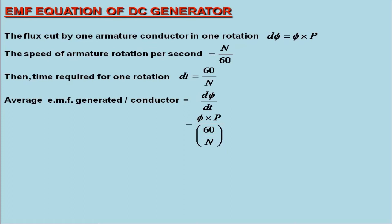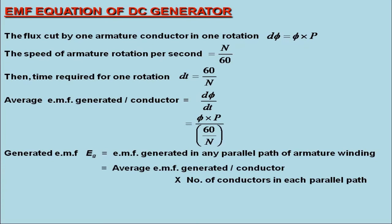We know that the generated EMF in a DC machine is nothing but the EMF generated in any parallel path of the armature winding. Therefore, the generated EMF, that is Eg, can be calculated by multiplying the average EMF generated per conductor with the number of conductors in each parallel path.